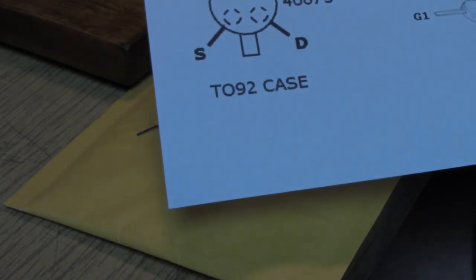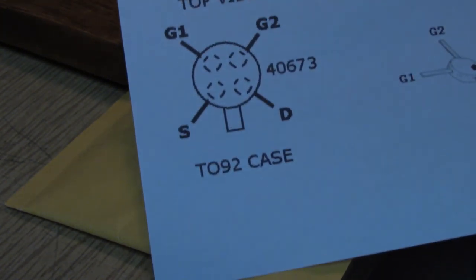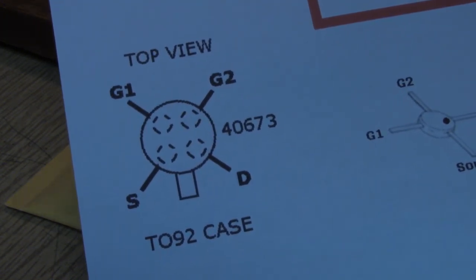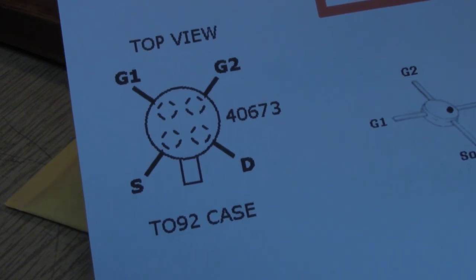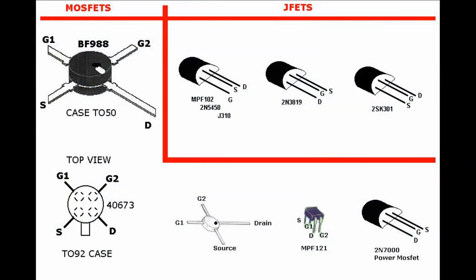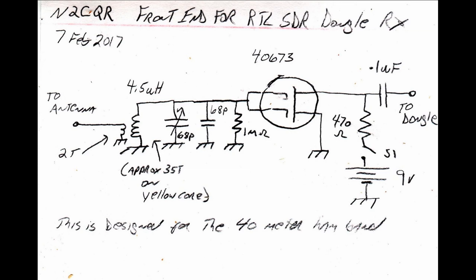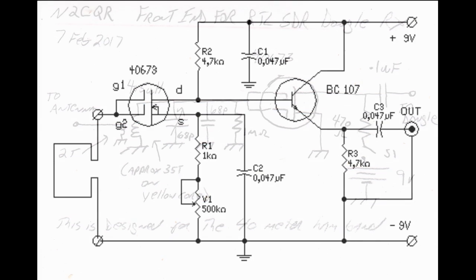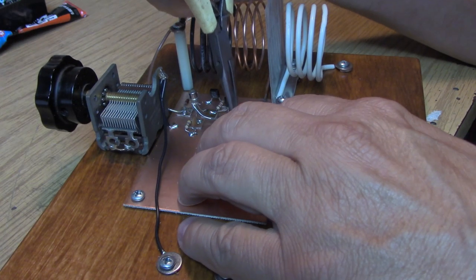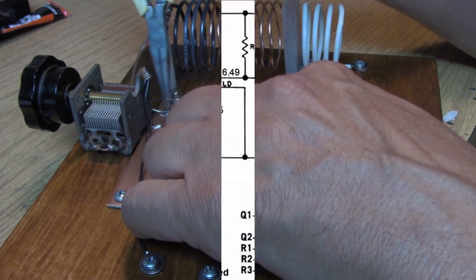The first configuration, we will tie G1 and G2 together, and we will be using the 40673 with the gates tied together to simulate a 3N128 single-gate MOSFET. The MOSFET is now installed, and we will remove the shorting wire.